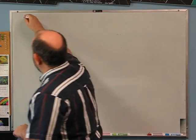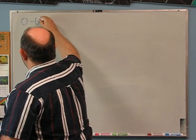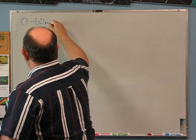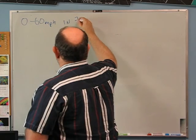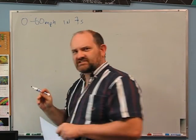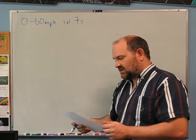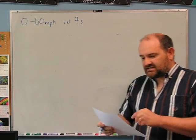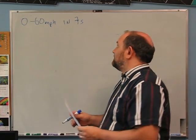A sports car is said to be able to go from 0 to 60 miles per hour in 7 seconds. When I was a kid they used to advertise this way. What is the acceleration of this car in meters per second squared?